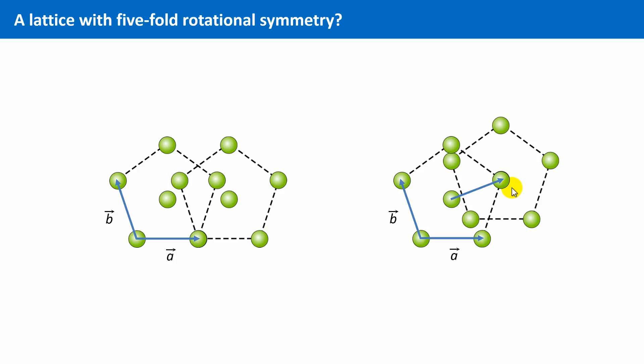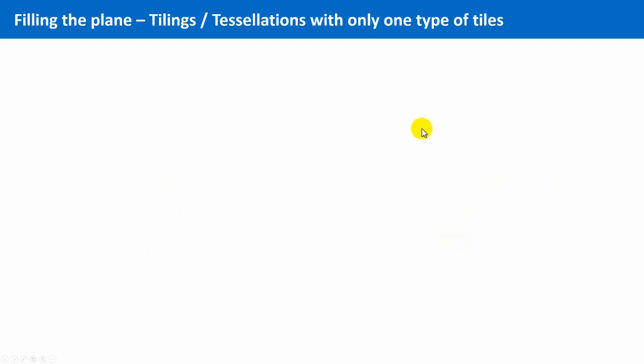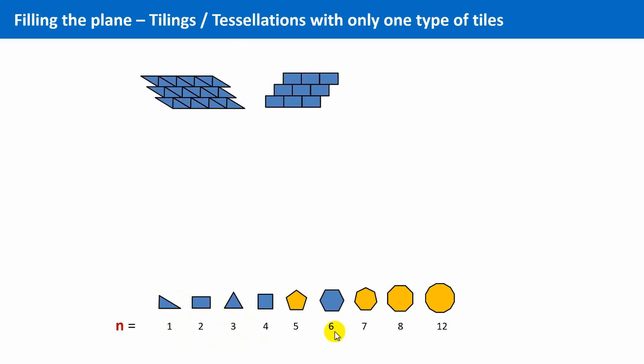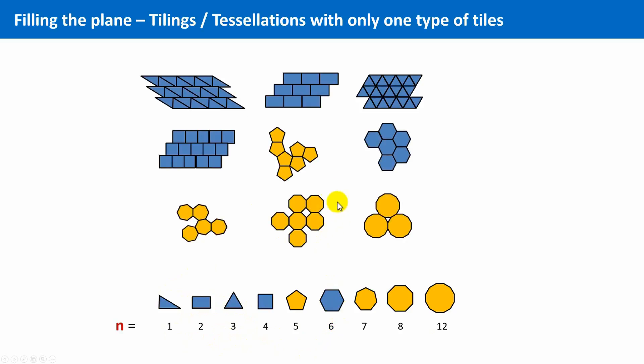This crystallographic paradigm is sometimes also geometrically illustrated by tilings or tessellations. And the question is, if we only allow one sort of tiles, which tiles can completely fill the plane by joining them together side by side? And the answer is again, only those with a rotational symmetry of 1, 2, 3, 4 and 6. Tiles with 5-fold, 7-fold, 8, 10 or 12-fold rotational symmetry do not cover the whole floor. Gaps between the tiles remain.